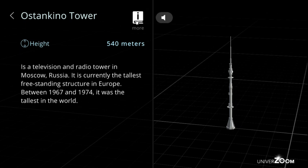Ostankino Tower, height: 540 meters. Is a television and radio tower in Moscow, Russia. It is currently the tallest freestanding structure in Europe. Between 1967 and 1974 it was the tallest in the world.